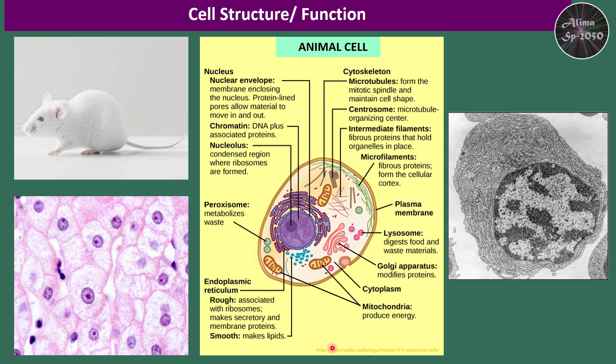The peroxisome metabolizes waste and is implicated in the protection of cells against oxidative damage. The cytoskeleton provides structural support, maintains the cell shape, and facilitates movement within the cell — for example, during cell division. It consists of microtubules, actin filaments, and intermediate filaments. The centrosome and centrioles are involved in organizing microtubules and play a role in cell division.